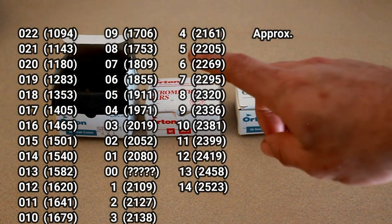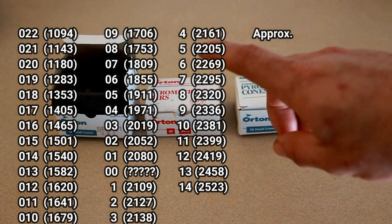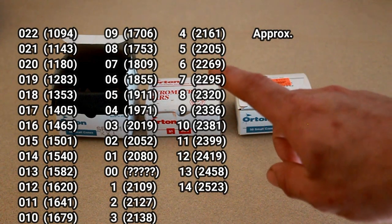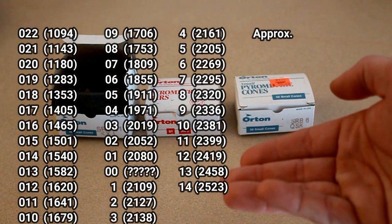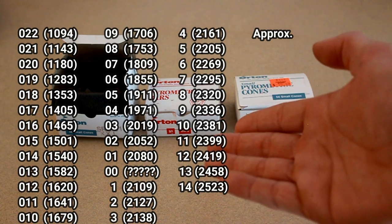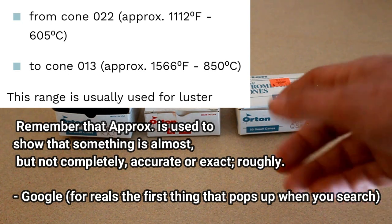The Orton cone chart starts way up here at the top left at 022. And starting at 022, this is what is considered very, very low fire. You can think of it as super low fire. And usually we don't deal with these cones, but let's just talk about them for a second.